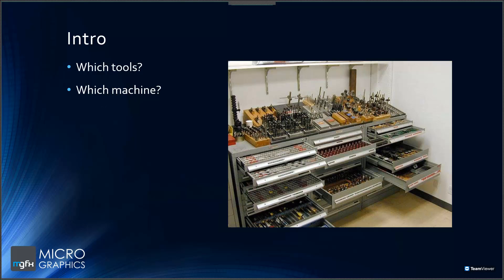To get that tooling information — especially for what you have on hand — you wouldn't want to hunt through Excel documents, go to machines and pull up tool tables, or physically dig through a cart and measure cutters to get dimensions. You'd want to go to one place, get all that information, and pull it into your program quickly and easily. At the same time, it would be helpful to know the capabilities of your machines, especially when a programmer is learning them and needs to choose which machine to program a part for.